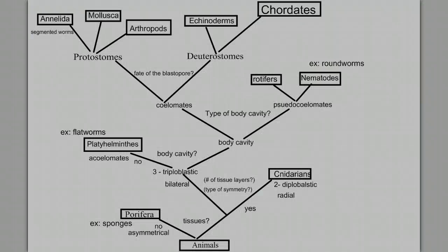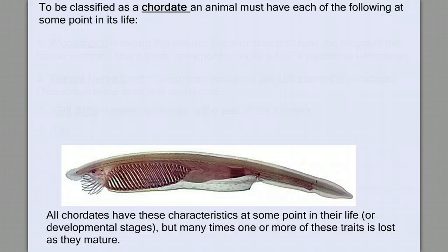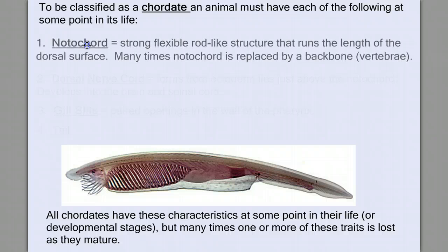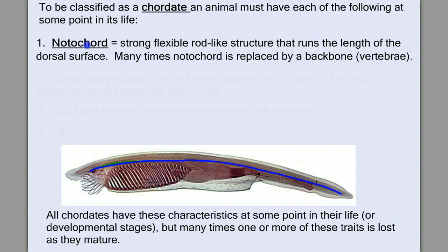And that brings us to the last of our phyla in the animal kingdom — the phylum Chordata. You, as a human, are a chordate. To be classified as a chordate, an animal must have each of the following at some point in its life. A notochord: a strong, flexible, rod-like structure that runs the length of the dorsal surface. Many times the notochord is replaced by vertebrae — replaced by a backbone in many of the chordates — but it gives the animal some rigid structural support to build their body off of.